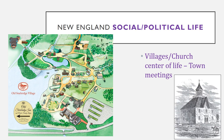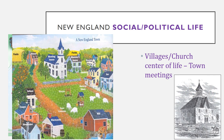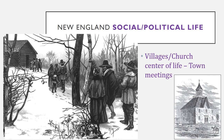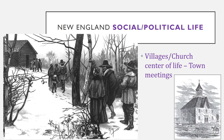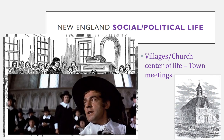New England social and political life centered around the local town or city. Since most people who settled in these colonies came from a strong religious background, much of their social life revolved around church. Whole villages were set up around the local church, where the community was expected to attend. If you haven't already, draw a quick sketch of a local New England town with a church in the center. Town meetings met in the largest building in town, which was the church building most of the time. Often elected leaders were religious, and many community laws were based in religious values, beliefs, and practices.